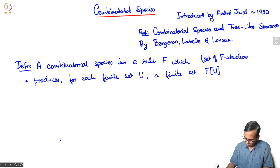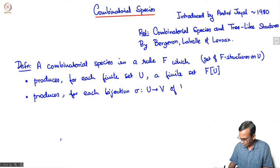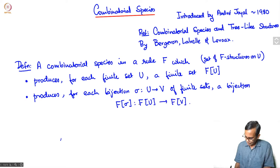The second thing it does: it produces for each bijection sigma of finite sets U to V, a bijection which we will denote by F(sigma) from F(U) to F(V). The functions F(sigma) are required to satisfy the following axioms.